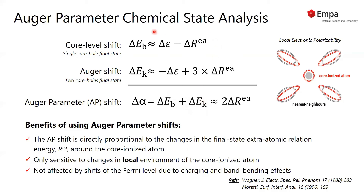By summing up these two terms, we can show that the Auger parameter shift is equal to two times the extra-atomic relaxation energy. This implies that the Auger parameter is only sensitive to final state effects, and the initial state effects have cancelled out.